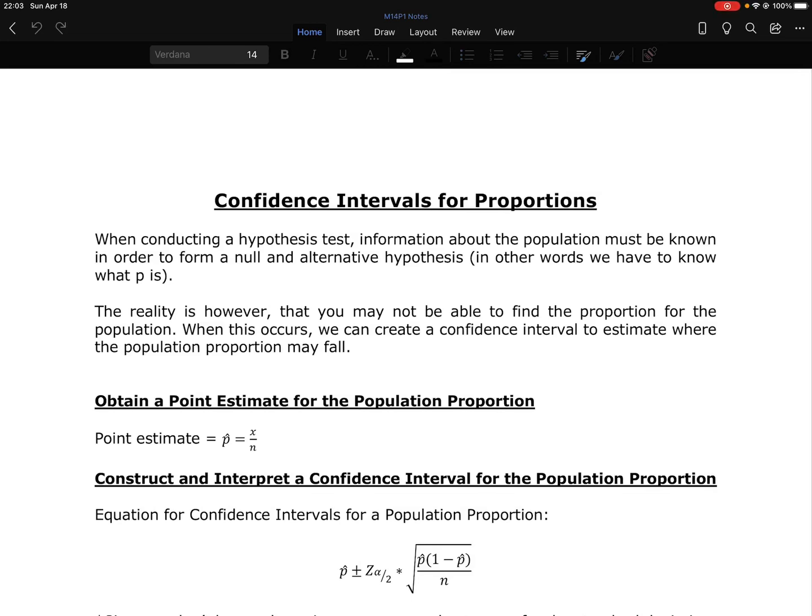All right, now we're going to take a look at confidence intervals, and we're going to start by looking at proportions. One of the issues that happens when we are doing a hypothesis test is we have to have that parameter value, that mu or p value - not p value, the proportion - the population proportion value that we get from either a prior study or some claim that we found. We have to have that value in order to create our null and alternative hypotheses.